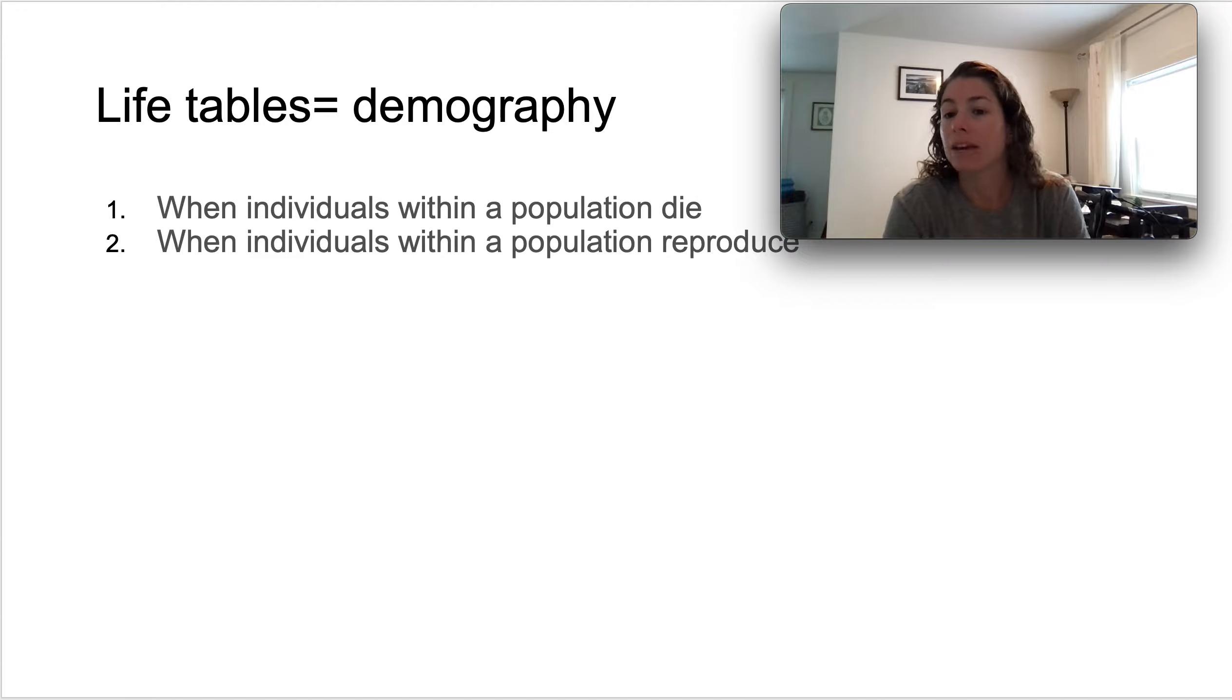Today we're going to talk about life tables, which are very important for ecology because they give important information regarding demography. Demography is the way a population reproduces and grows over time. We're talking about growth rate, and when we talk about life tables, I'm going to be talking about how and when individuals die in a population, the trends that we see regarding death, when the population reproduces, and how individuals reproduce. Those two things come together and we can see them visually in a life table.